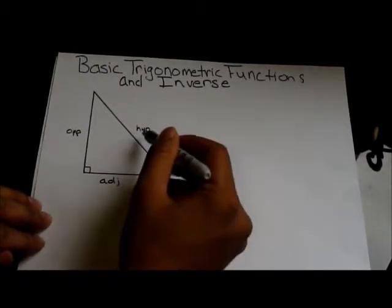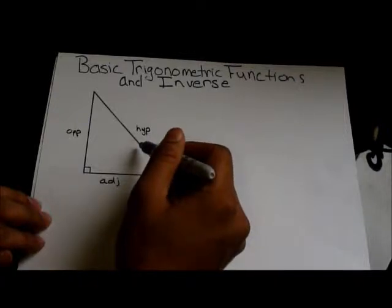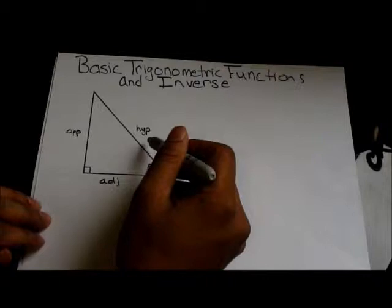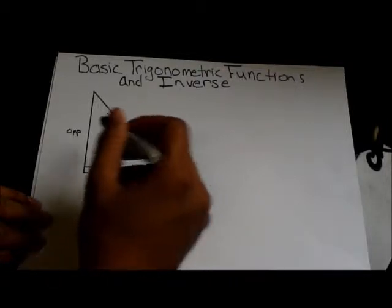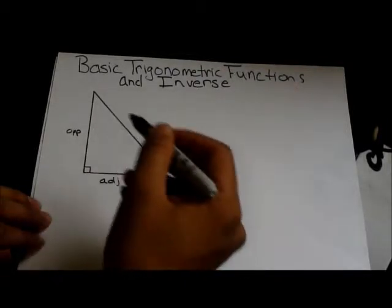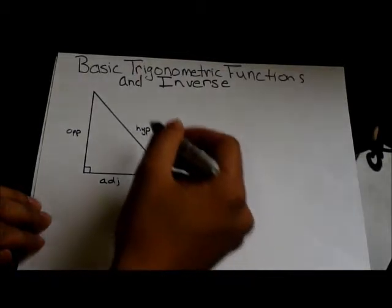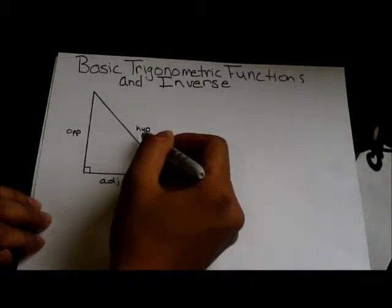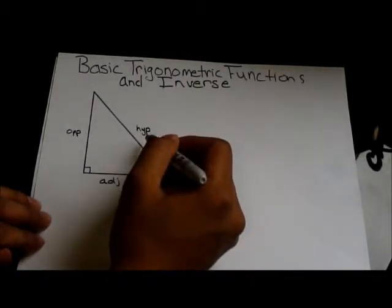And, we know this as the hypotenuse because this is going to be the longest length of the triangle. If we do the a squared plus b squared equals c squared, c squared being our hypotenuse, this length is going to be the longest.